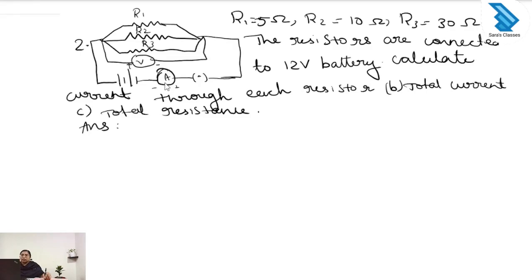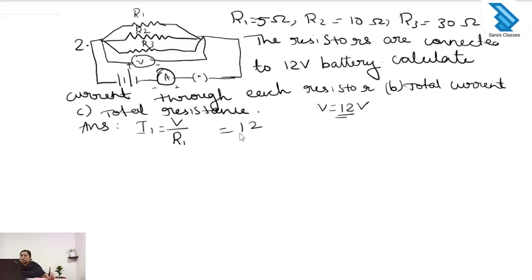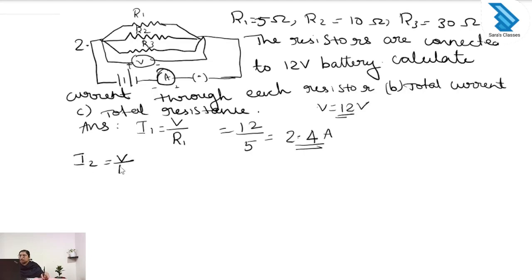In the case of parallel connection, the current through each resistor will be different. First we find I1, the current through R1, using I1 equals V by R1. V is 12 volt and R1 is 5 ohm, so I1 is 2.4 ampere. Next, I2 equals V by R2, which is 12 by 10, giving 1.2 ampere.